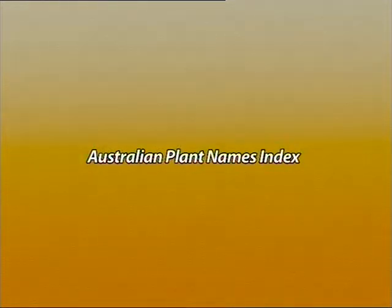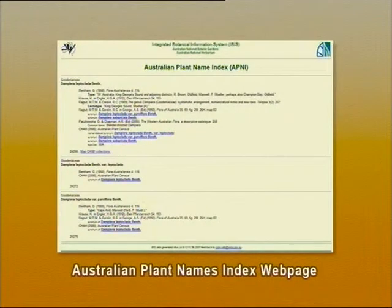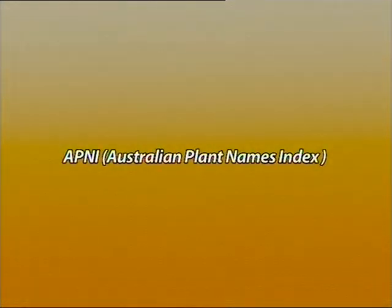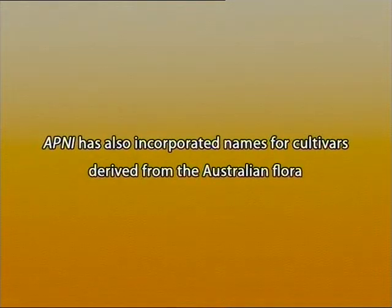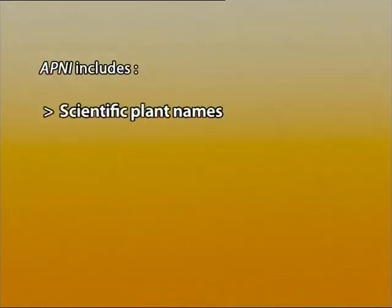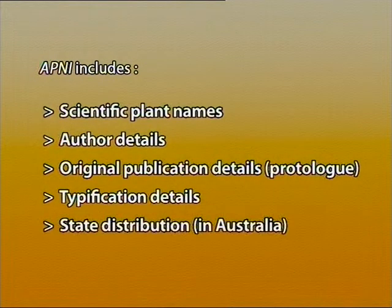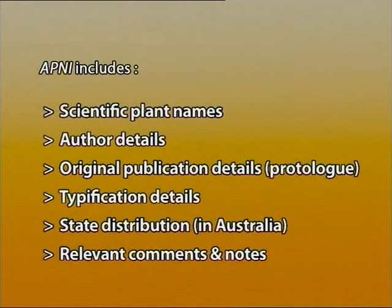In addition to these two main indexes, there is one more — the Australian Plant Names Index (APNI). It records names for all Australian plants compiled since 1973. The APNI includes many names not included in either Index Kewensis or the Gray Index. In recent years, the APNI has also incorporated names for cultivars derived from the Australian flora. Information available from APNI includes scientific plant names, author details, original publication details, typification details, state distribution in Australia, and other relevant comments and notes.